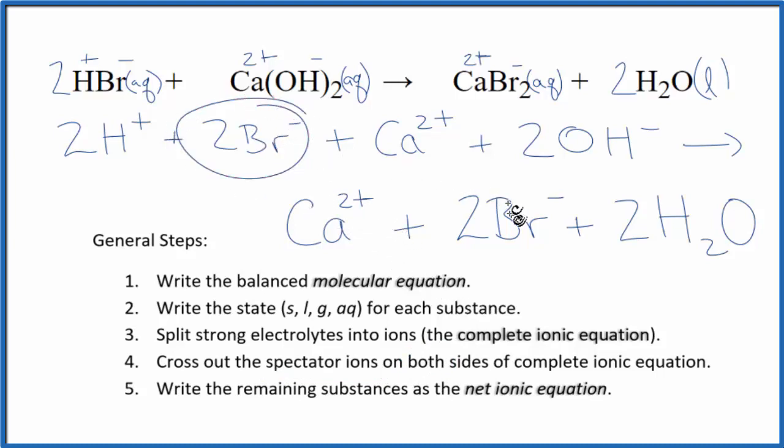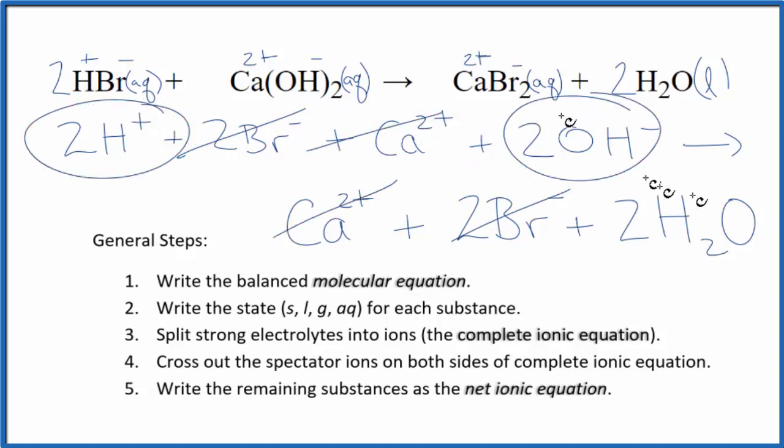2 bromide ions in the reactants, 2 in the products. Let's cross those out. We have the calcium ion here, and in the products. Let's cross that out. And what's left is unique. And this is the net ionic equation for HBr plus Ca(OH)₂.